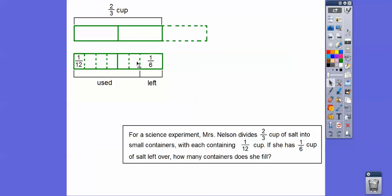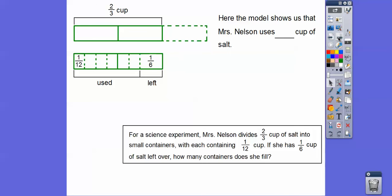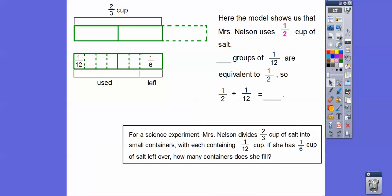Now, 1/12 is half of 1/6, so we cut each sixth in half to get twelfths. She uses 1/12 per container in that 1/2 cup. How many groups of 1/12 are equivalent to 1/2? One, two, three, four, five, six — six groups. So 1/2 ÷ 1/12 = 6. Mrs. Nelson filled six containers.